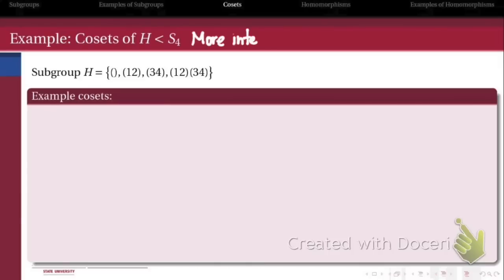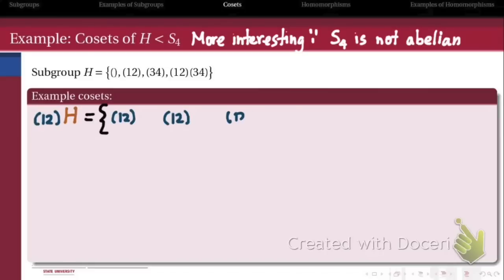So here are examples of some cosets. This one gets kind of hairy, again, because S4 is non-abelian. So let's suppose I take the coset generated by (1,2) on the left. So what does this coset look like?